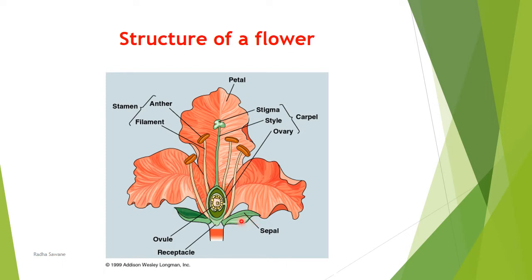The first outermost whorl of a flower is called calyx, and the individual member of calyx is called sepal. In the diagram we label it as sepal because not all members are visible in section. Flower buds always appear green because the bud is completely covered by calyx — the main function of calyx is protection. It protects the flower particularly in the bud condition. Usually sepals are green in color and perform photosynthesis.